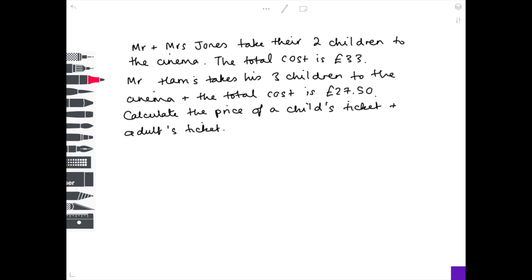We know that we have in the Jones family two adults going, two children going, and that the cost of their tickets is £33. So I'm going to assign the letter A for the adults; that makes sense to me, and I know that there are two adults, Mr and Mrs Jones, so 2A. I'm going to assign the letter C for the children. There's two children, so I'm going to assign that 2C.